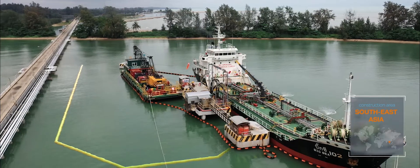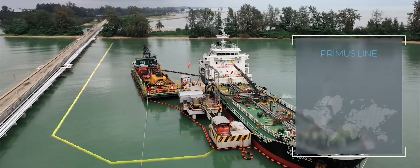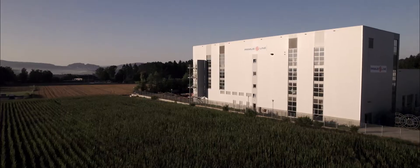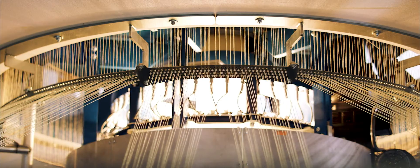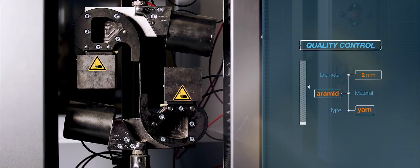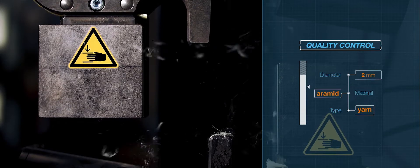Comprehensive documentation of the installation process is part of the Primus Line quality promise that runs like a common yellow thread through all areas, from development through production to installation.